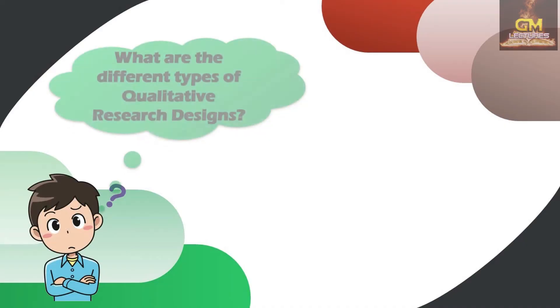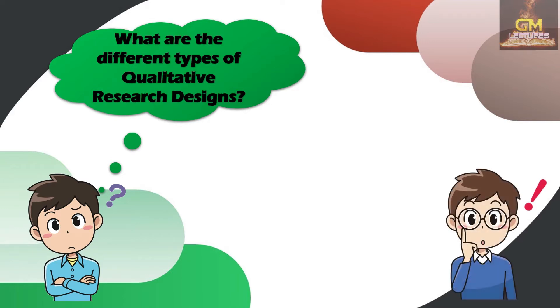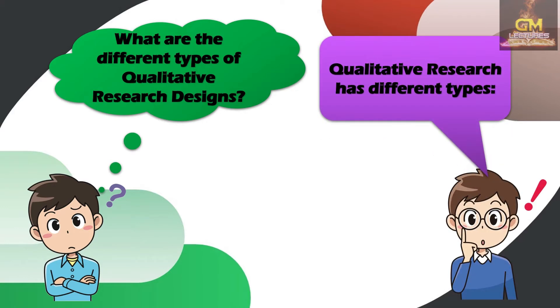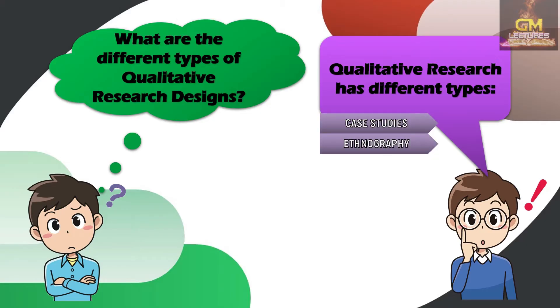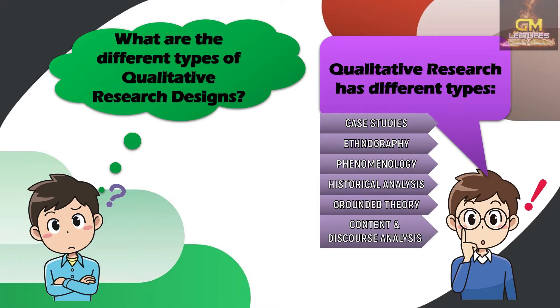Now that we have discussed what qualitative research is, the next question is: what are the different types of qualitative research designs? Qualitative research has different types, namely case studies, ethnography, phenomenology, historical analysis, grounded theory, and content and discourse analysis.